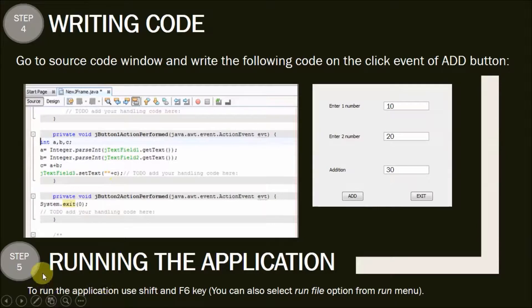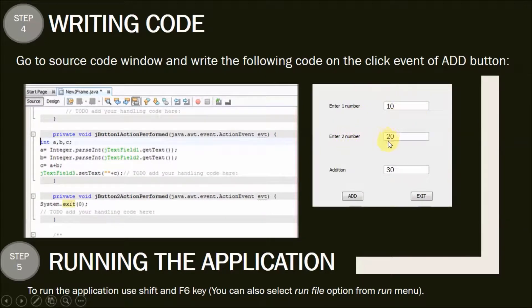Step 5 is running the application. To run the application we use Shift + F6. When we run the application, we enter the first number — for example 10 — then the second number, say 20. If we click the Add button, the result will be displayed. If we click the Exit button, the application will end.